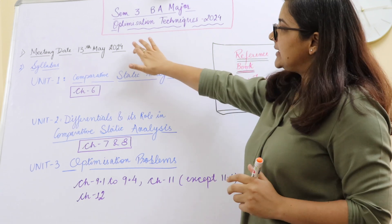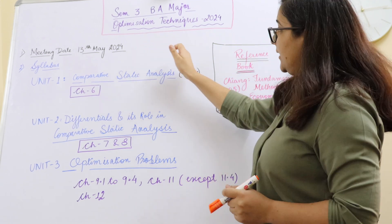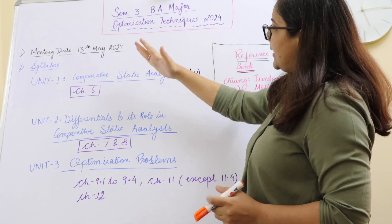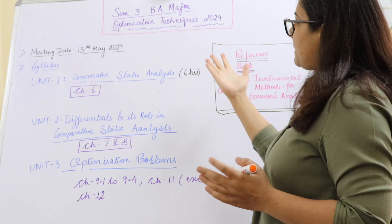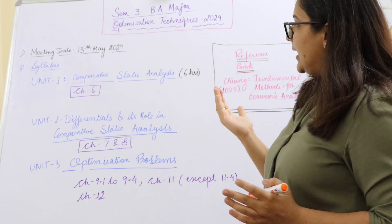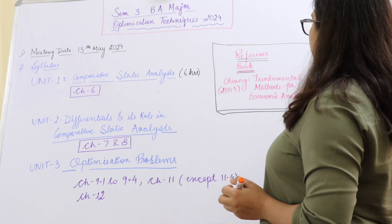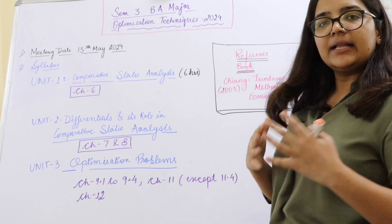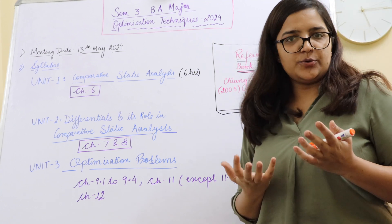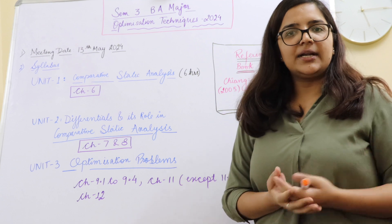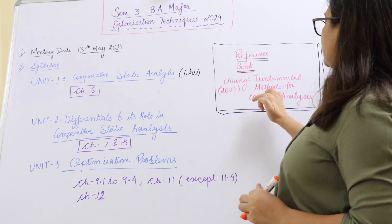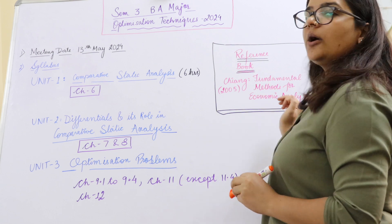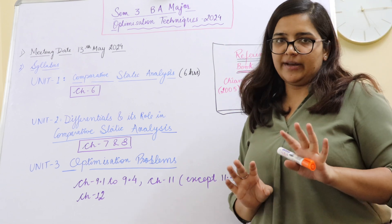There was a meeting which was conducted on 13th of May 2024 wherein what is going to be our syllabus that was decided. What is going to be a reference book is again the same reference book which you had, which is the Chiang book which you had in the basic mathematics course as well. So Chiang 2005 fundamental methods for economic analysis, that is the book that we are going to refer.